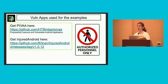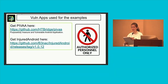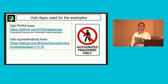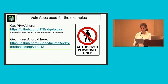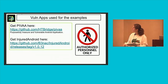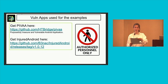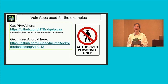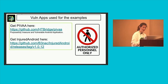The vulnerable apps I used for the examples are PIVA, which is a purposefully insecure and vulnerable Android application, and one called Injured Android. The URLs are on the screen. I must stress: you must always have the authorization of the owner of an app before testing it — otherwise it's going to be illegal, so be careful.